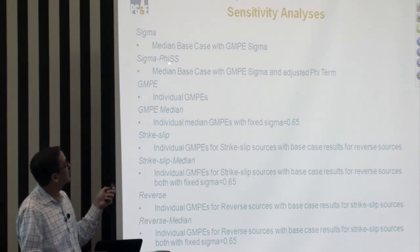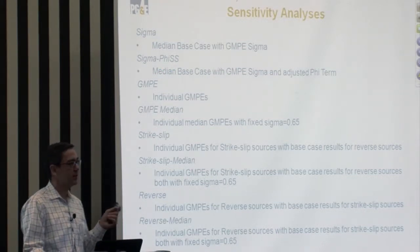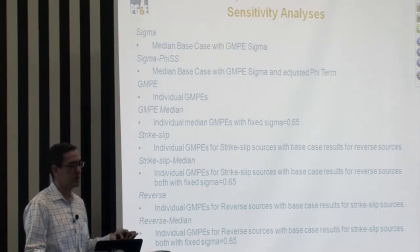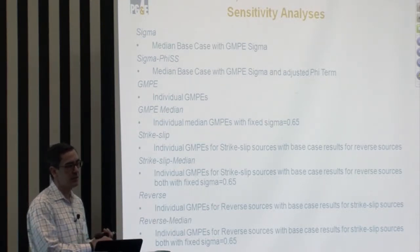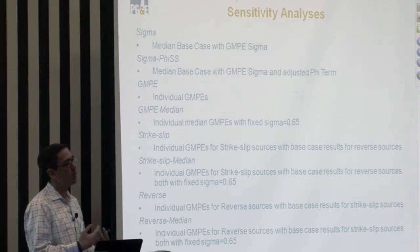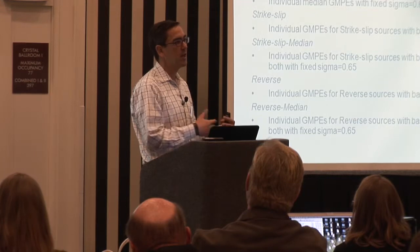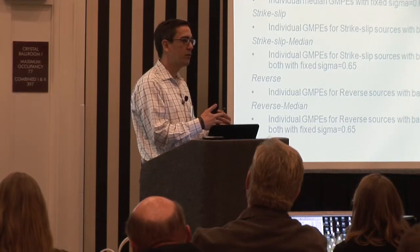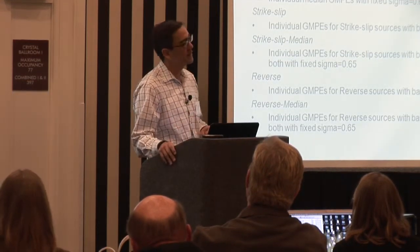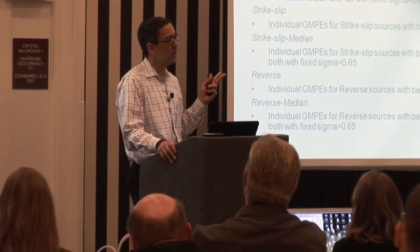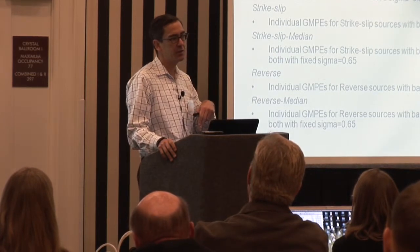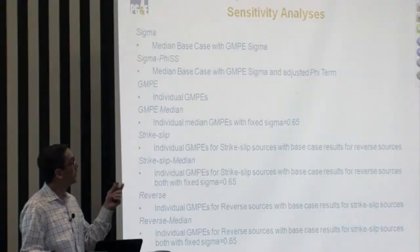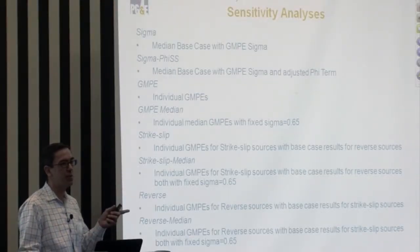Related to that, we then do the same thing but modify the phi term. As Katie mentioned, there are three options: a constant term, a magnitude-dependent term, and a magnitude- and distance-dependent term. We take the median ground motions from the base case but swap in the sigma model from a different GMPE with this additional phi SS correction. Because the Idriss relationship for 2008 and the new NGA2 model don't break their sigma apart, and the GK model doesn't have sigma broken into phi and tau terms, we can't run those cases for phi SS.